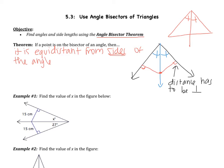Let's try some examples. Looking at example one, it says find the value of x in the figure below. The first thing we're going to notice is we have two congruent segments, and they are both perpendicular. That tells you that this point is on the angle bisector of the triangle, so that tells you that these angles are congruent, in which case x is 27.